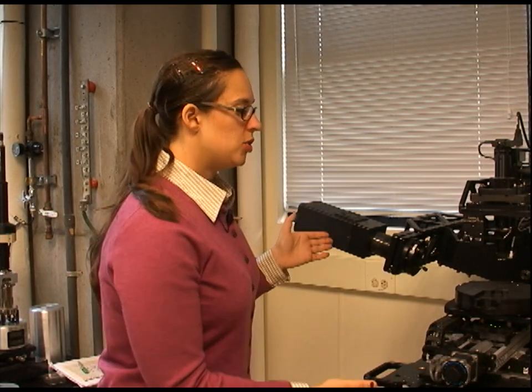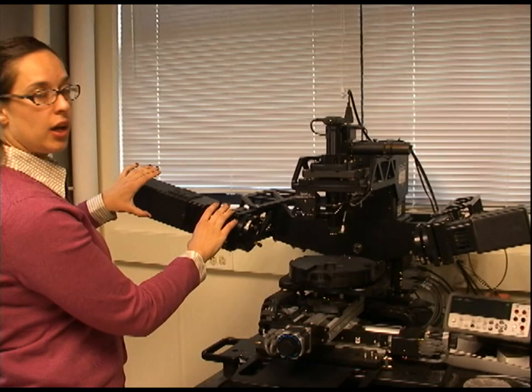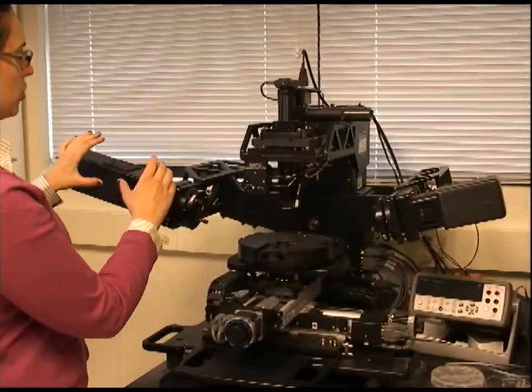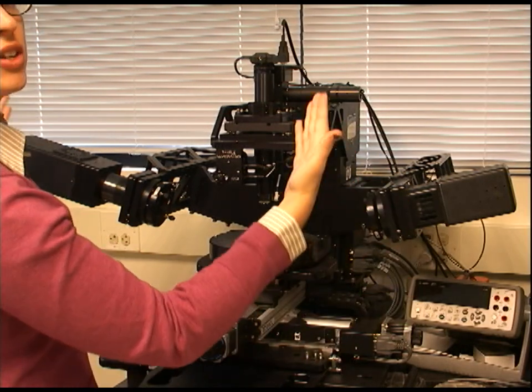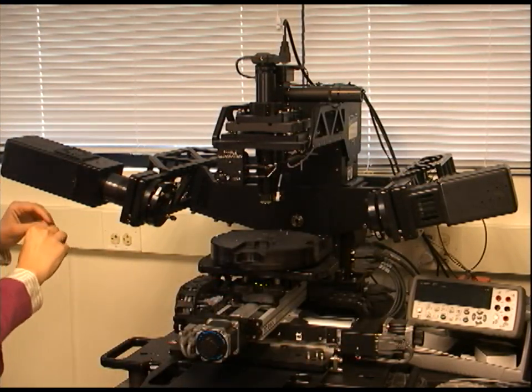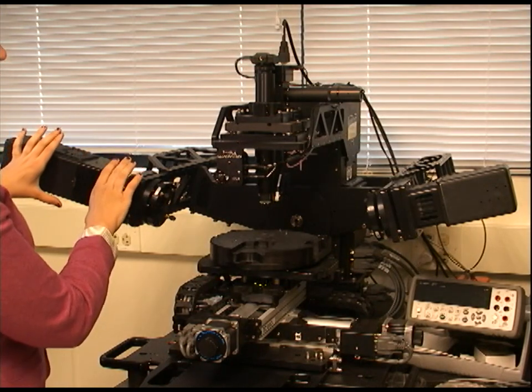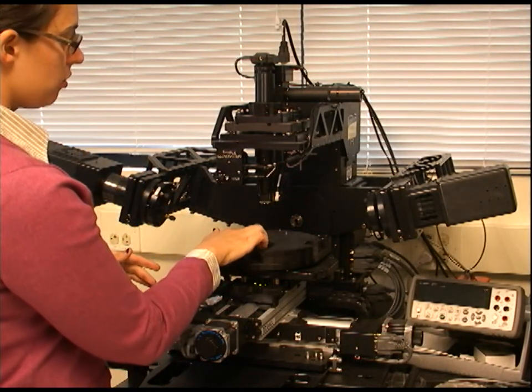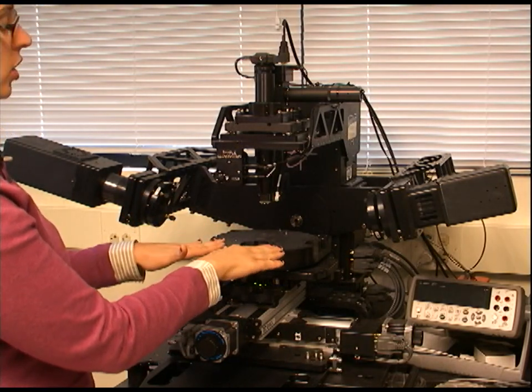So this is the ellipsometer. When we're conducting a measurement, we have light that comes through from this arm here. It's important to note that this arm, as well as the arm of the detector, can move at different angles. When we're conducting a measurement, we have input light from this arm coming in and shining on our sample, which is mounted on our sample stage here.